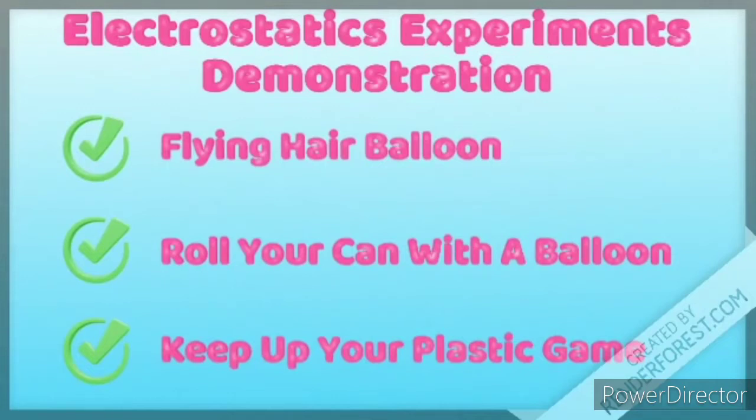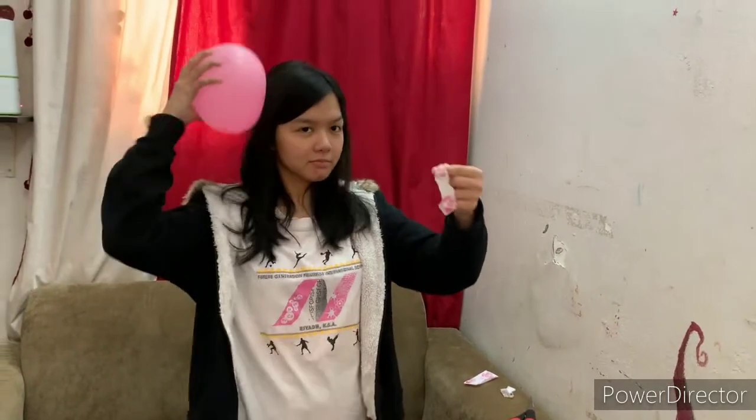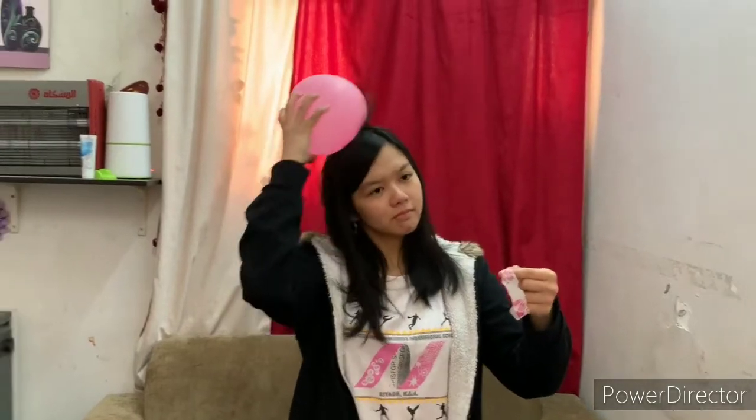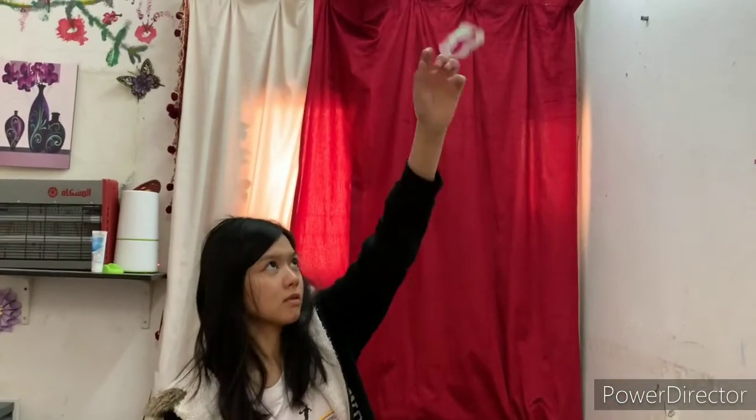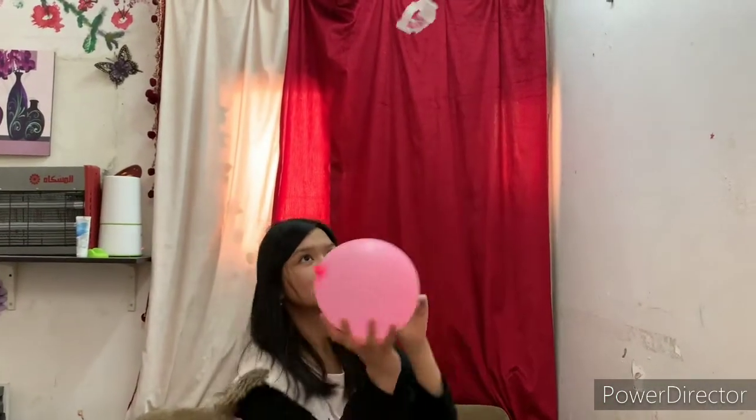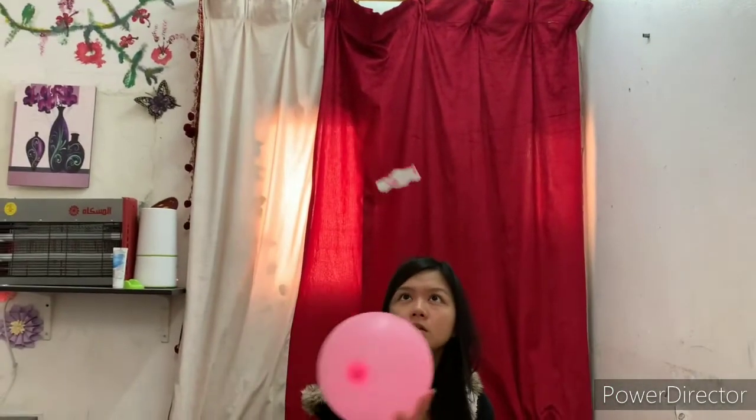Last up on our list is a game. Can you keep up your plastic? Let's go! You will need a balloon and a plastic. Rub the balloon on your hair to get negative charges. Next, rub that same plastic on your hair to get negative charges as well. Try your best not to let your plastic fall on the ground. Let us use the science of repulsion, wherein both negative charges repel each other. That's why we have this amazing game on our list. Thanks to static electricity.